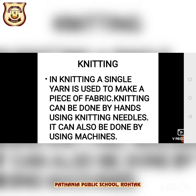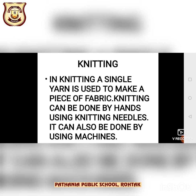Now, knitting. In weaving, two sets of yarn are used simultaneously to make a fabric. This is not so in knitting — in knitting, a single yarn is used to make a fabric. The process of making a fabric by interlocking loops of a single yarn with knitting needles or machines is called knitting. Knitting is done by hand using knitting needles or on machines. The simplest example of making fabric by knitting is the making of sweaters.